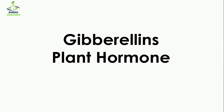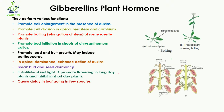Hello everyone, today we are going to study about gibberellin, a plant hormone. Gibberellin performs various functions in the plant. For example, it promotes cell enlargement in the presence of auxin — meaning if auxin is present, they both work together to increase the size of the cell.